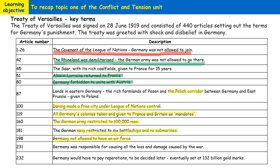Some historians argue the most important term placed on Germany was that Germany was made to accept responsibility and war guilt for causing the First World War. This was significant because it allowed the winning countries to impose really harsh terms. Had Germany not admitted fault, it might have been more difficult to justify those terms. Germany was also made to pay reparations of 132 billion gold marks, or 6.6 billion pounds, paid to the winning countries.